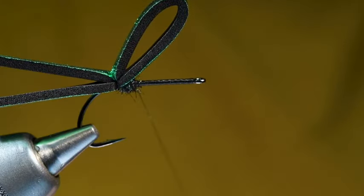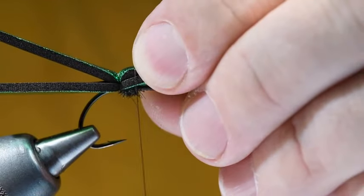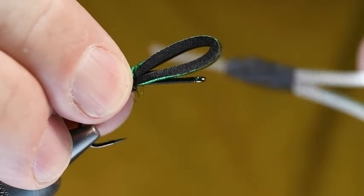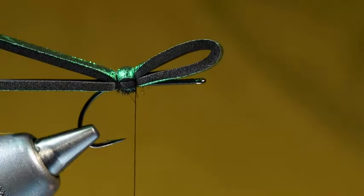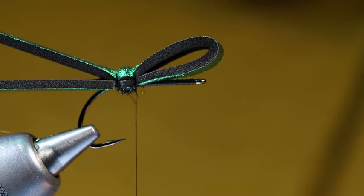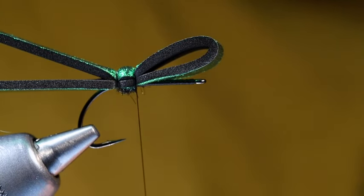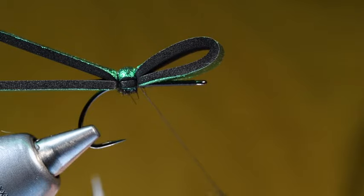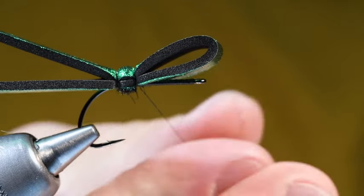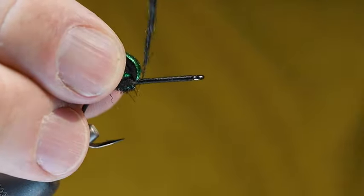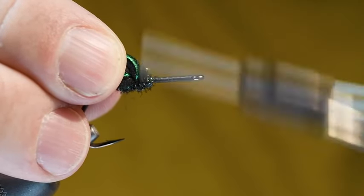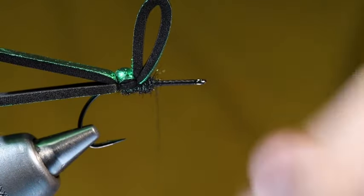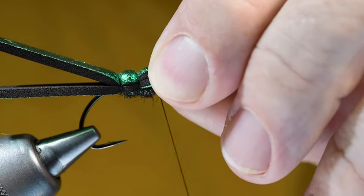I'll fold that foam forward. Wet that thread again. That just helps that thread slide down in there. I want to try to make those wraps as straight around as I can. Four or five turns there to create the front end of the first segment. Now I'm going to repeat that a couple more times with another little pinch of dubbing. I'll fold that foam back and build another little ball. Wet that thread a bit and create the next segment.